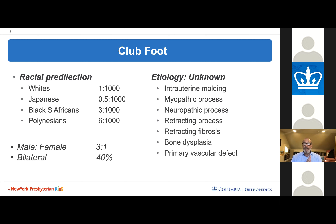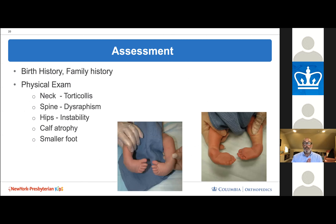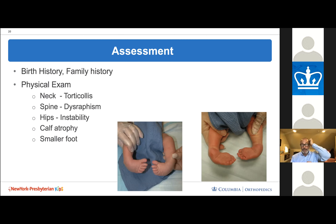We have no clear idea why clubfoot occurs — some genes have been found associated with it but none uniformly so. A careful birth history and family history should ascertain any underlying genetic, syndromic, or neurologic cause. Always examine the neck for torticollis, the spine for dysraphism, and check the hips for instability. With unilateral clubfoot, calf thinning and a smaller foot will be noted.